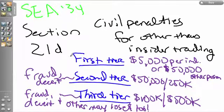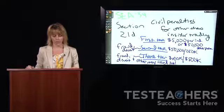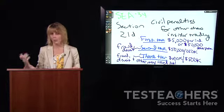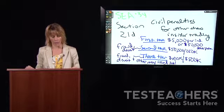The three tiers of penalties under Section 21D: civil penalties imposed are payable to the Treasury of the United States. If the person should pay but hasn't paid, the Commission may refer the matter to the Attorney General who shall recover such penalty by action in the appropriate U.S. District Court. The remedy is not exclusive — just because someone gets in trouble here does not mean they won't get in trouble in other places as well.